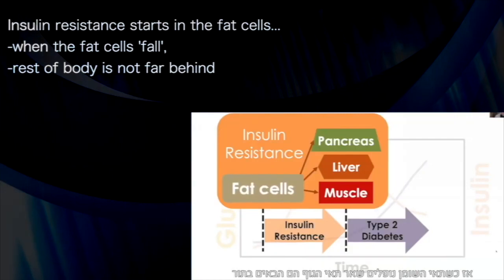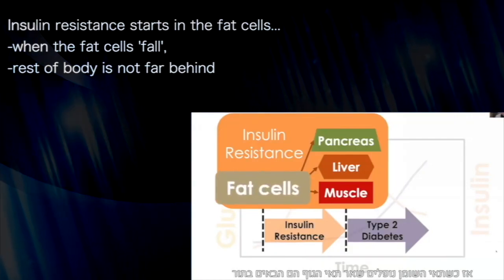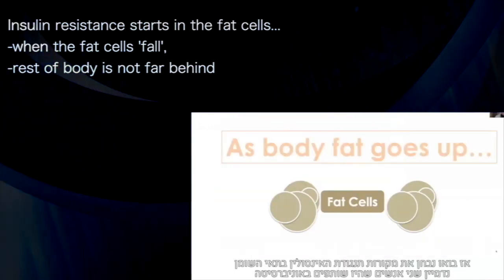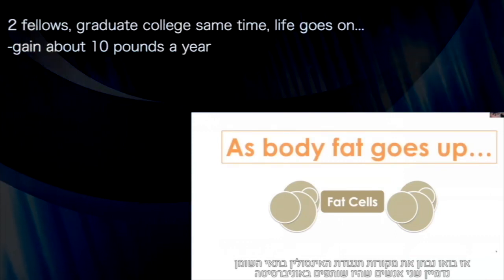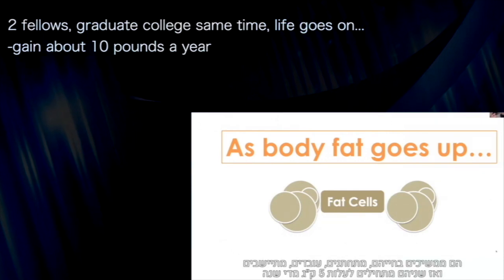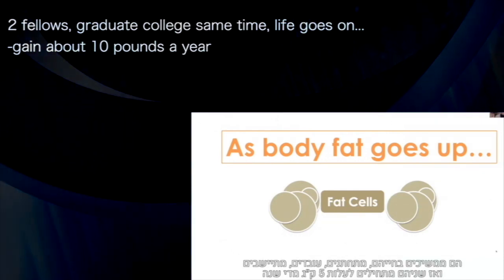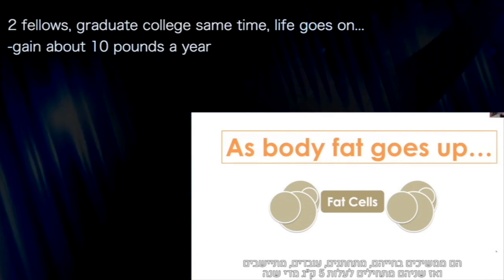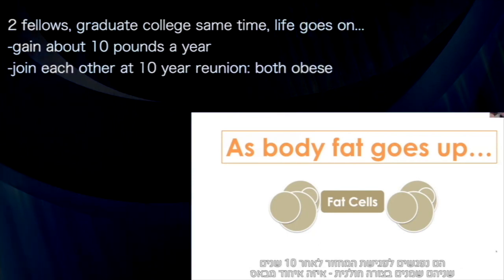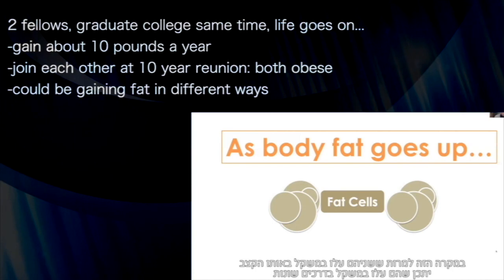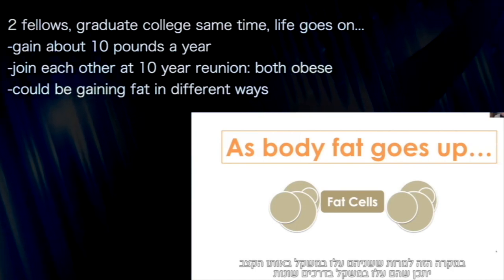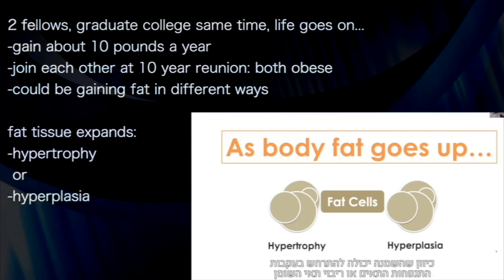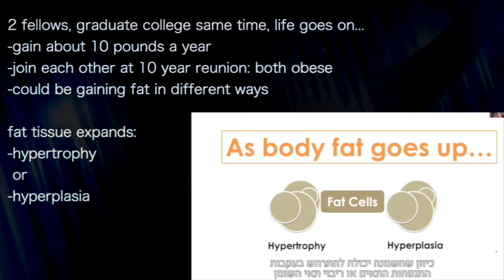Insulin resistance starts in the fat cells. When the fat cells fall, the rest of the body isn't far behind. Let's explore the origins of insulin resistance at the fat cell. Consider two individuals — former roommates at university — who later get desk jobs. Life settles down, the waistline starts to expand, and they're both gaining ten pounds of fat per year until they're both morbidly obese. These two men who appear to be gaining fat at the same rate could be gaining fat in different ways.